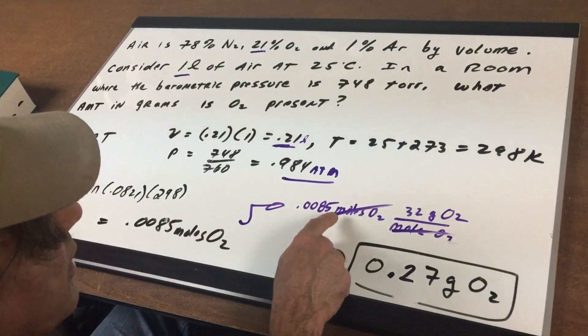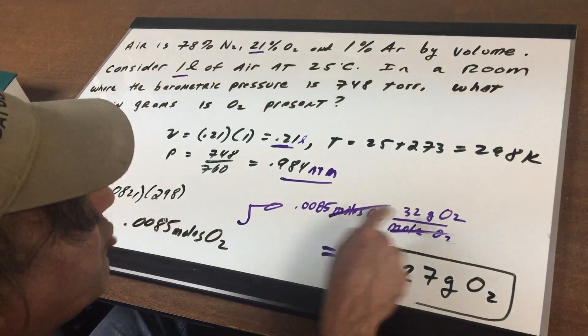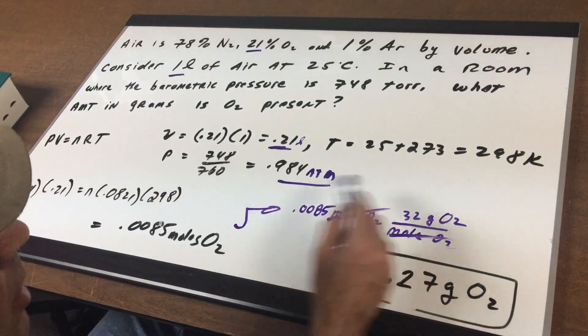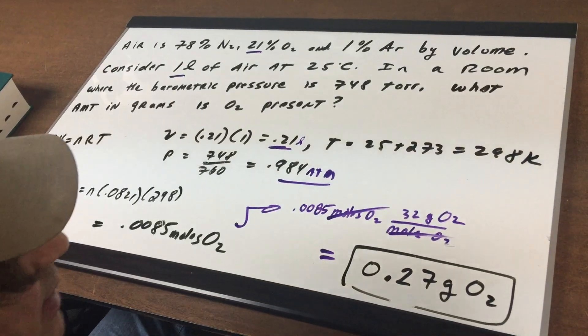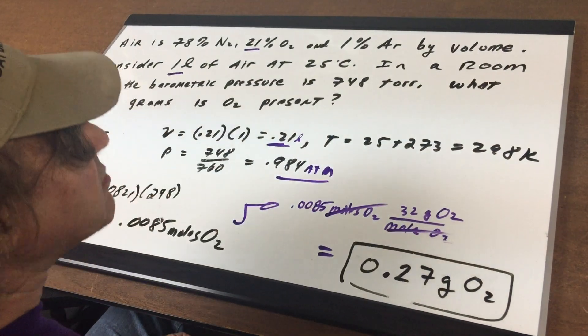All you do is take those moles of oxygen - there's 32 grams per mole. Multiply them out and that gives 0.27 grams of oxygen.